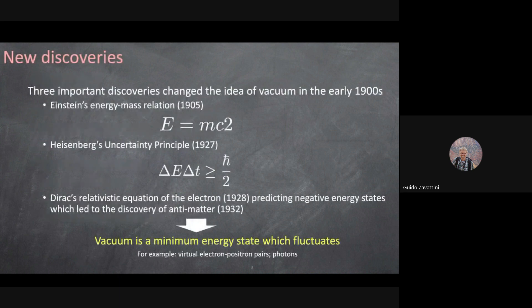The idea of vacuum changed at the beginning of the 1900s because of three key discoveries: first, Einstein's equivalence of mass and energy, E=mc²; second, Heisenberg's uncertainty principle; and third, in 1928, Dirac's relativistic equation for the electron, which predicted negative energy states. A few years later, these negative energy states were identified as antimatter.